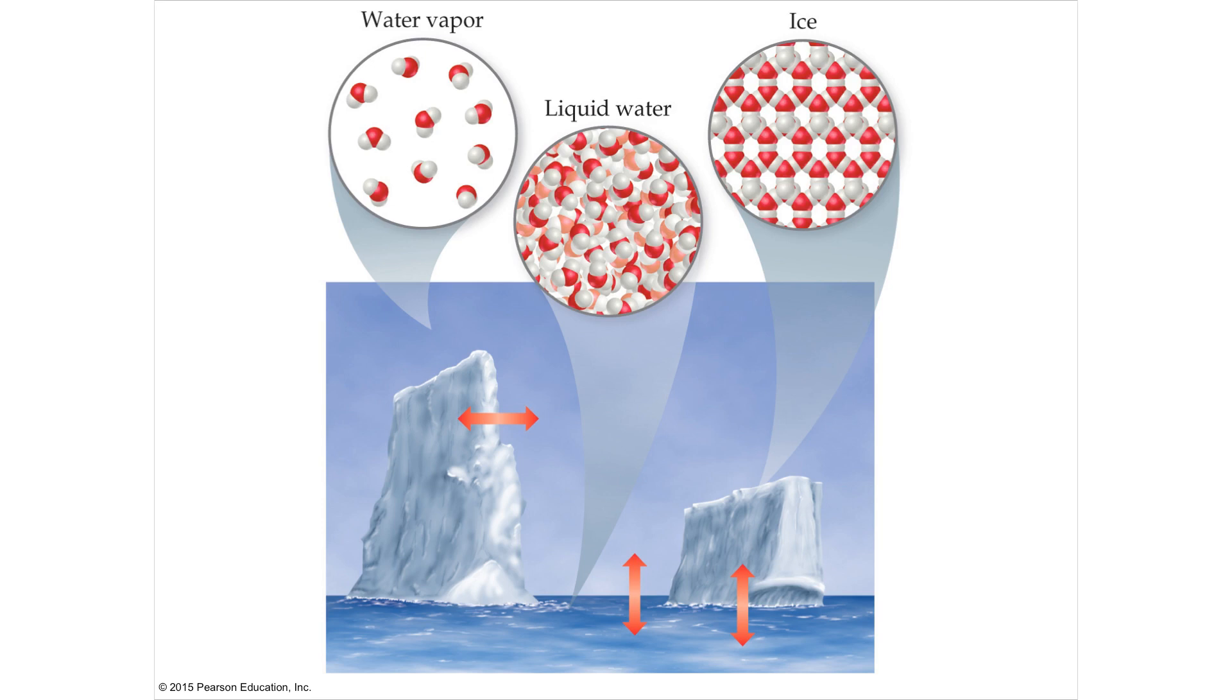So a gas or a vapor doesn't have a fixed volume or shape. It conforms to its container. It's compressible. You can compress a gas. You can increase its pressure and squish it into a tank to blow up your party balloons.